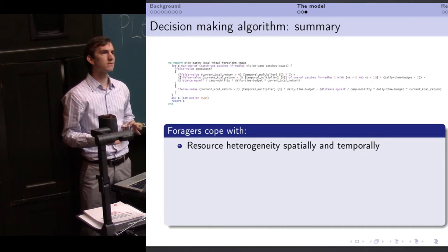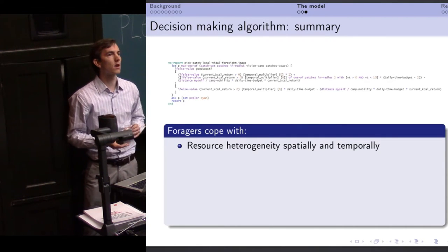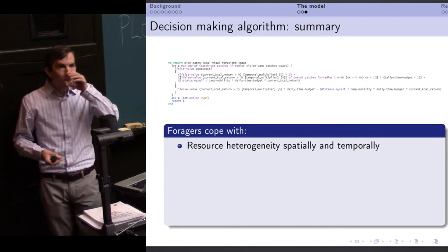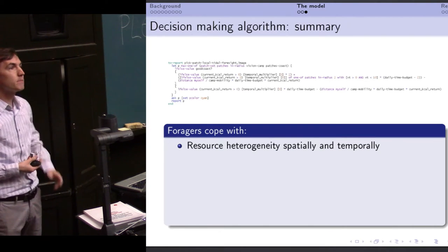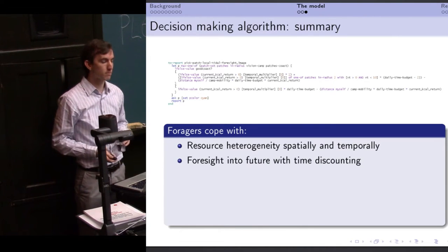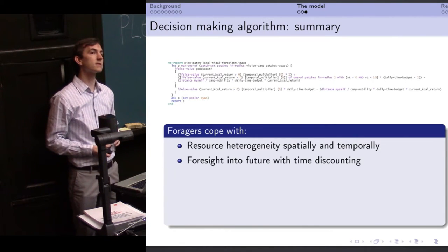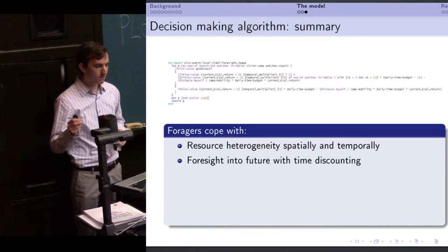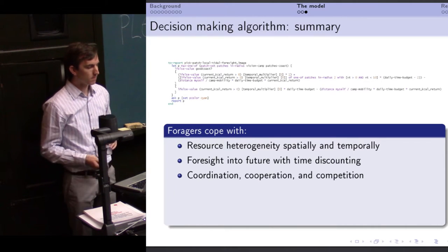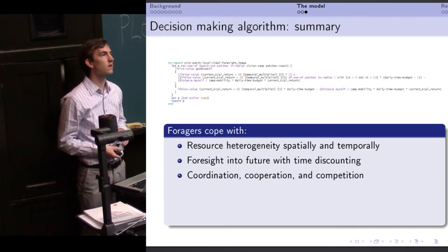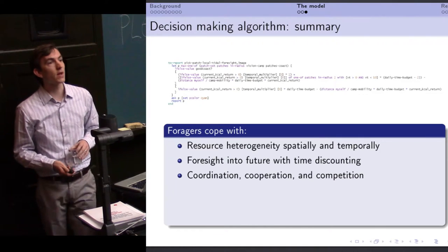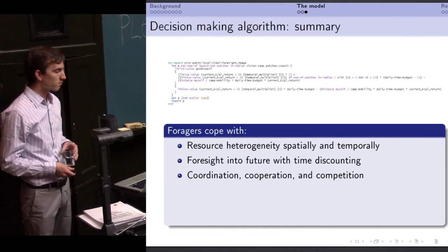And with this relatively simple algorithm, our agents are able to cope with resource heterogeneity, both spatially and temporally. They're able to forecast return rates into the future with a little time discounting bit moved in. Because there's a lot of agents, they are now coordinating to a certain extent with the agents in their group, they are cooperating with those agents in terms of food sharing. They are competing with other agents in other camps. All of this is sort of boiled in here.